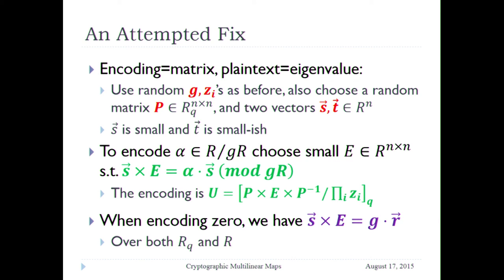You can try to fix this in some ways. Here is one instructive way: instead of giving you an encoding of an element, give you a matrix, where the implicitly encoded value is an eigenvalue of this matrix. All these matrices would have the same eigenvector, and the thing you really want to encode is encoded as an eigenvalue. You choose the same g and denominator z_i as before, a random matrix P, a vector s as the eigenvector, and a vector t playing the role of the randomizer h. When you encode an element alpha, you choose a small matrix E that has s as its eigenvector and alpha as the corresponding eigenvalue, then multiply by P and P-inverse and divide by all the z_i's.